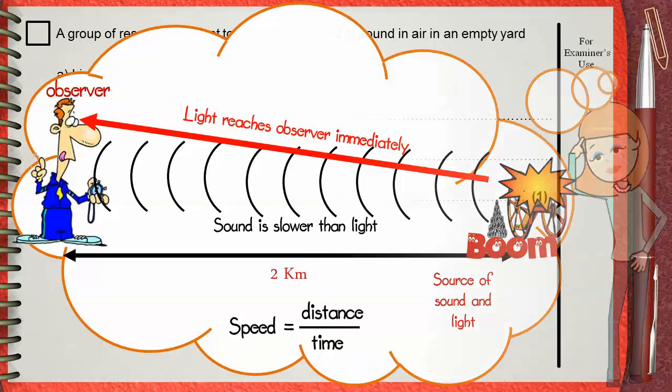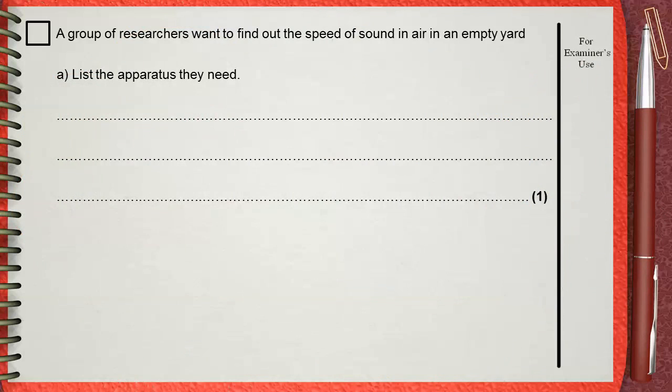So the apparatus needed for this experiment. Number one, source of sound and light like a sound pistol or fireworks. Number two, measuring tape or any means that can measure the distance between the observer and the shooter. Number three, a stopwatch.